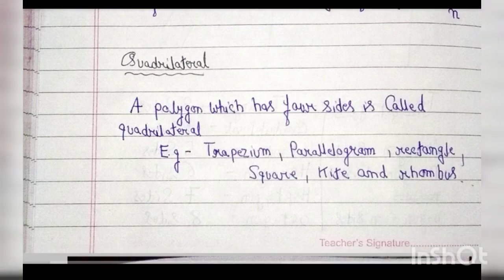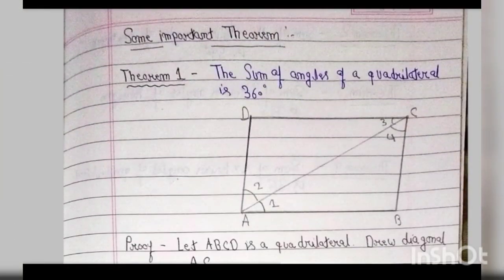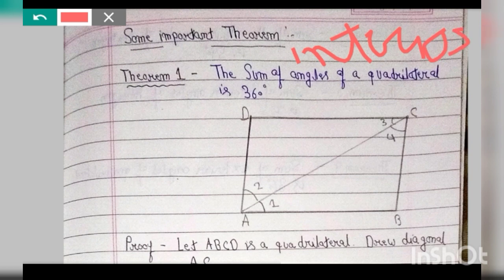Some important terms and a theorem: the theorem says the sum of the interior angles of a quadrilateral is 360 degrees.